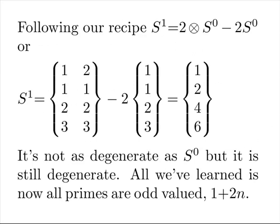Following our recipe, S one equals two times S zero's gap set minus two times each member of S zero. Notice the gaps are uniformly twins and tuples are uniformly twice n. It's not as degenerate as S zero, but it is still degenerate.